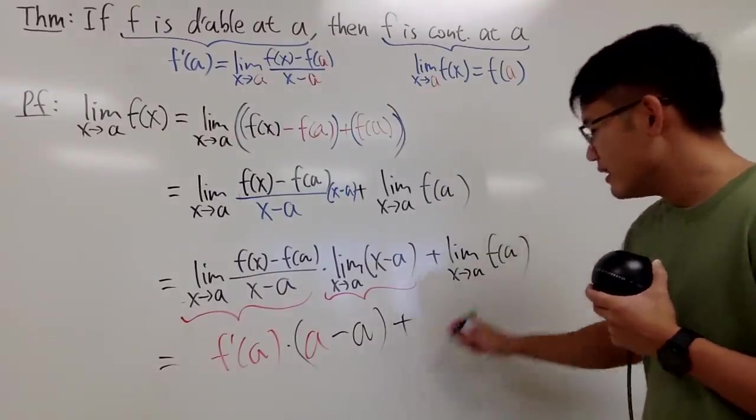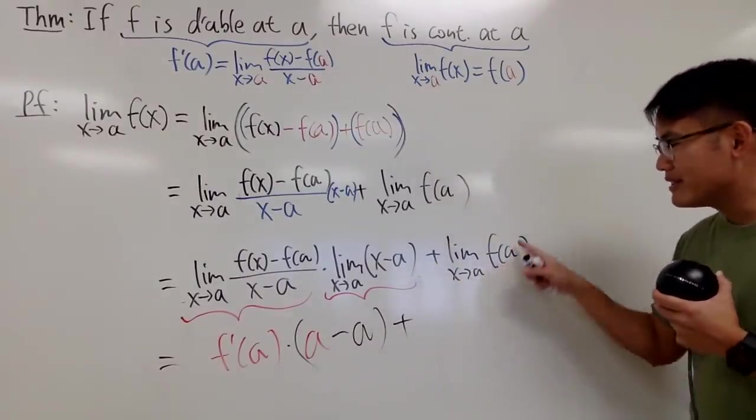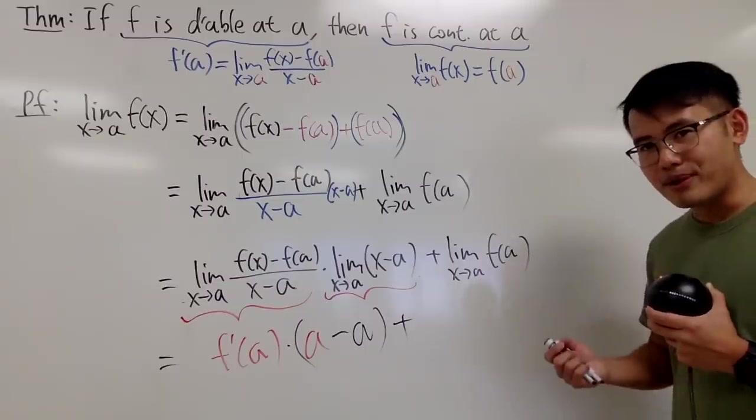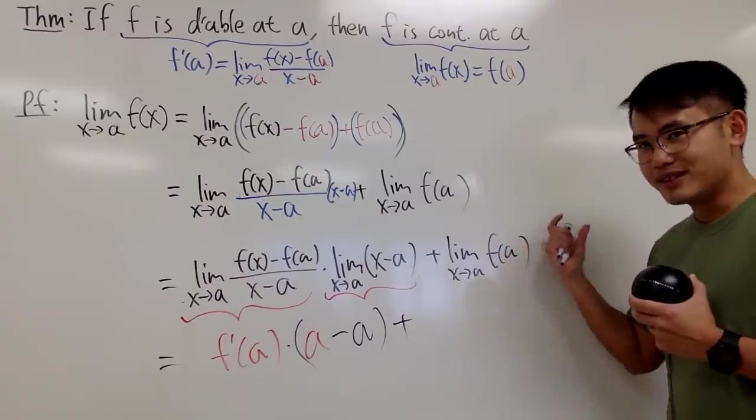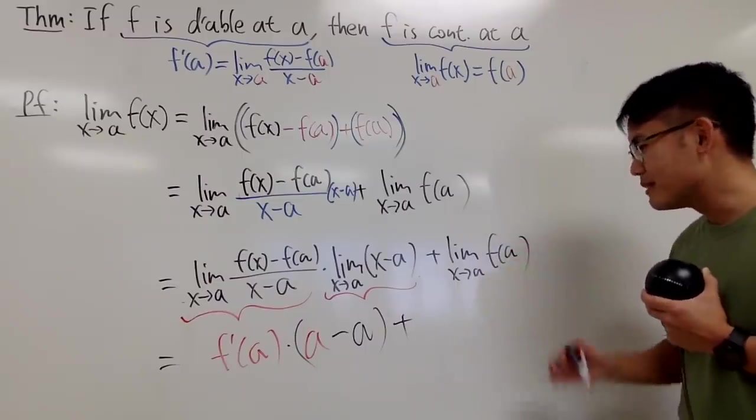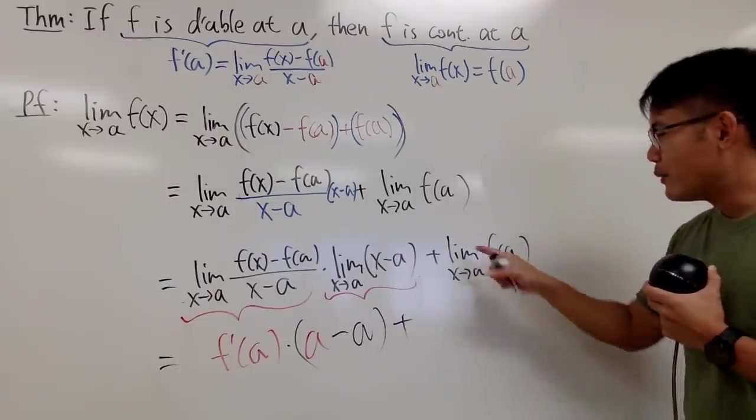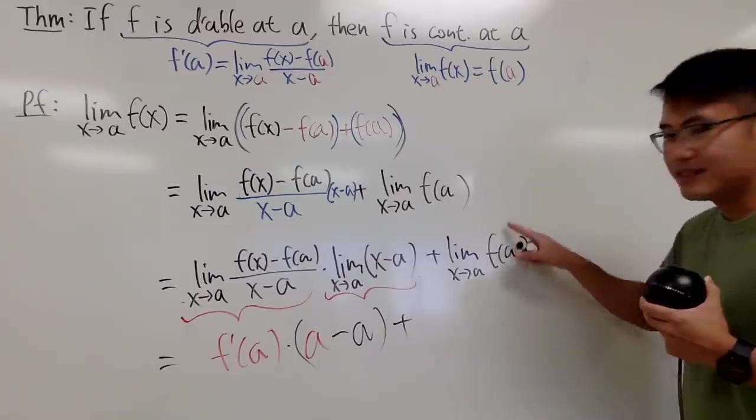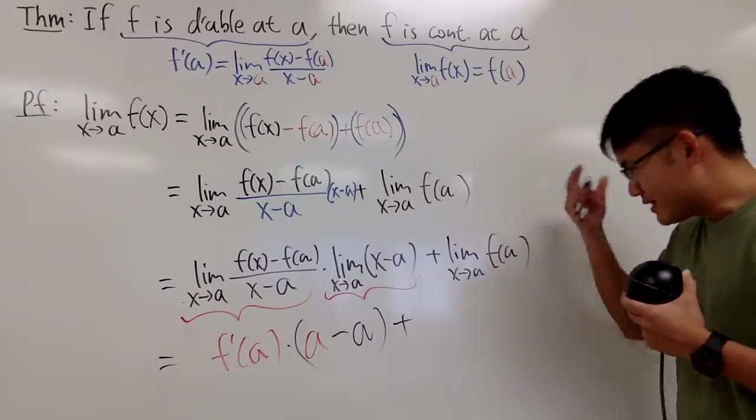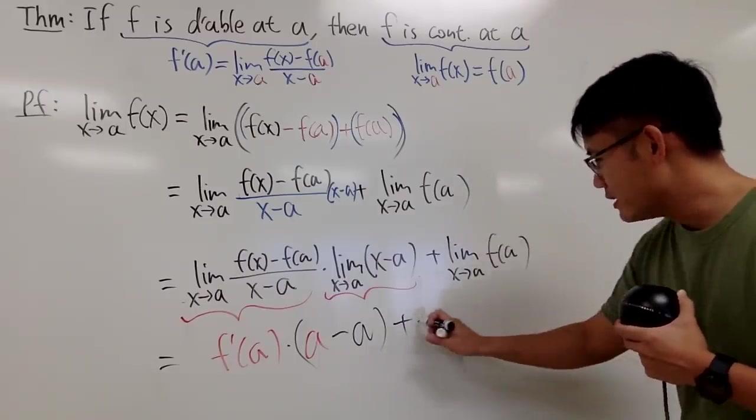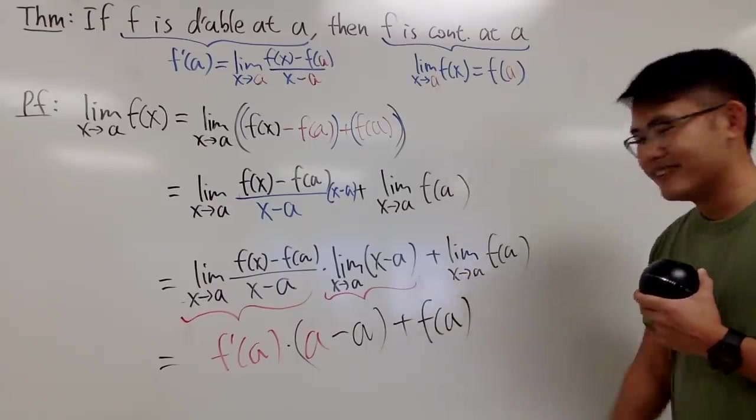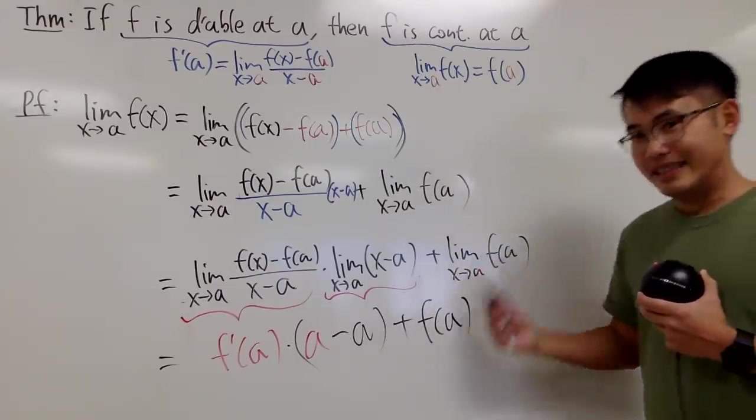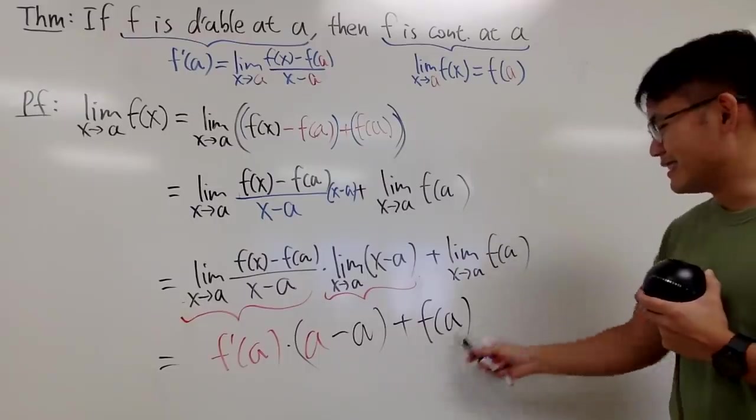And then, of course, this limit right here, notice f of a is just a number. This right here is just a number. I don't know what the number is, but it's just a number. And when you take the limit, when x approaching to whatever, of a constant right here, a number, it's just the number. So, the limit of this right here is simply f of a. So, I did do the limit, and the limit is just this number.